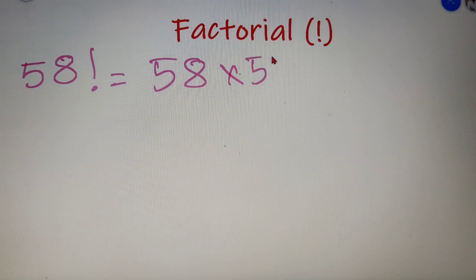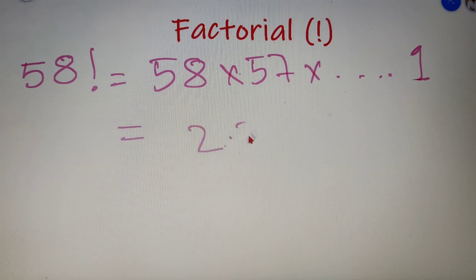Let's take one more example. Suppose we have the number 58. So 58 factorial will be 58 into 57 into all the numbers up to the number 1 and this number comes out to be 2.35 into 10 to the power 78.